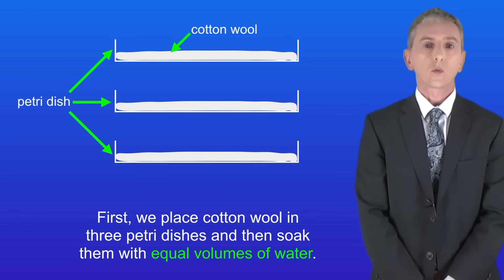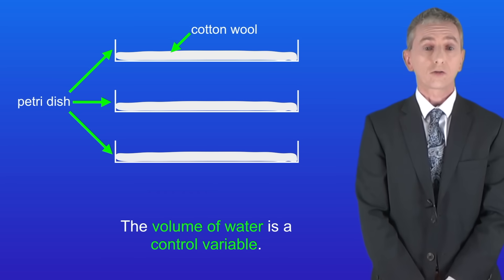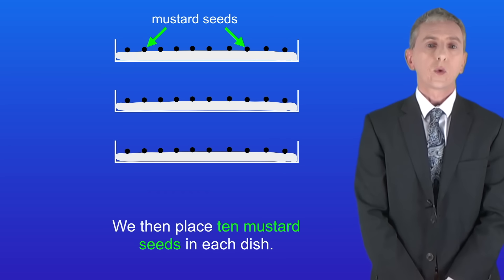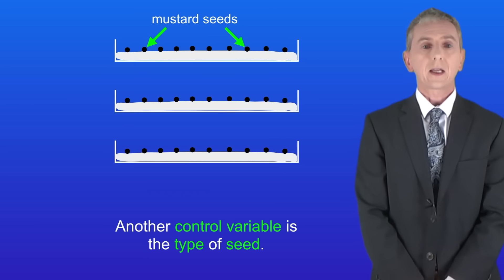First we place cotton wool in three petri dishes and then soak them with equal volumes of water. The volume of water is a control variable. We then place 10 mustard seeds in each dish, and again another control variable is the type of seed.